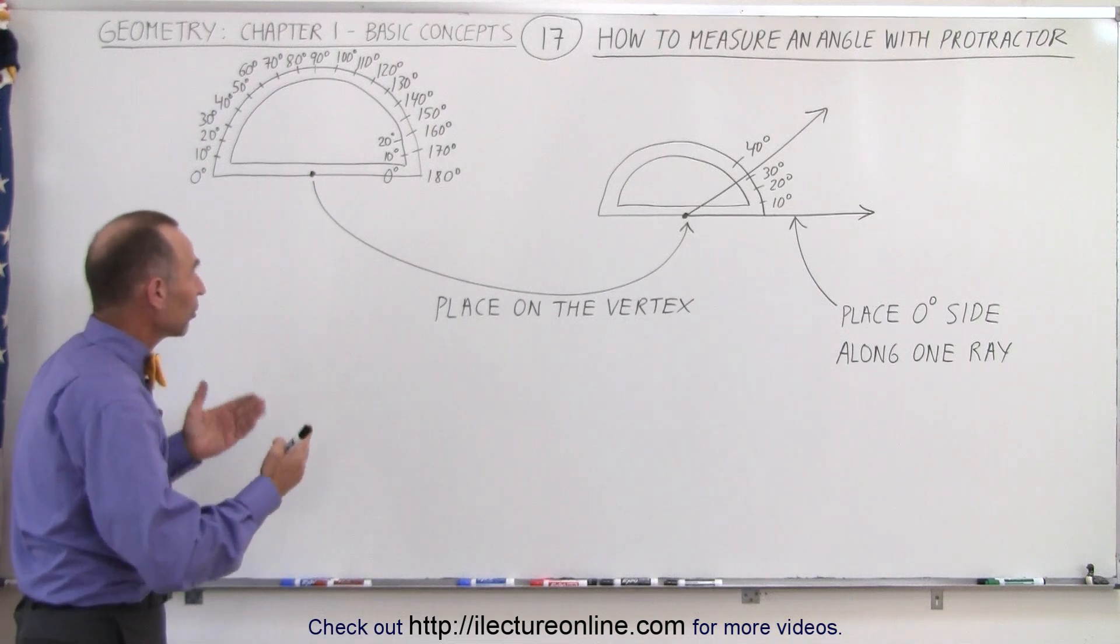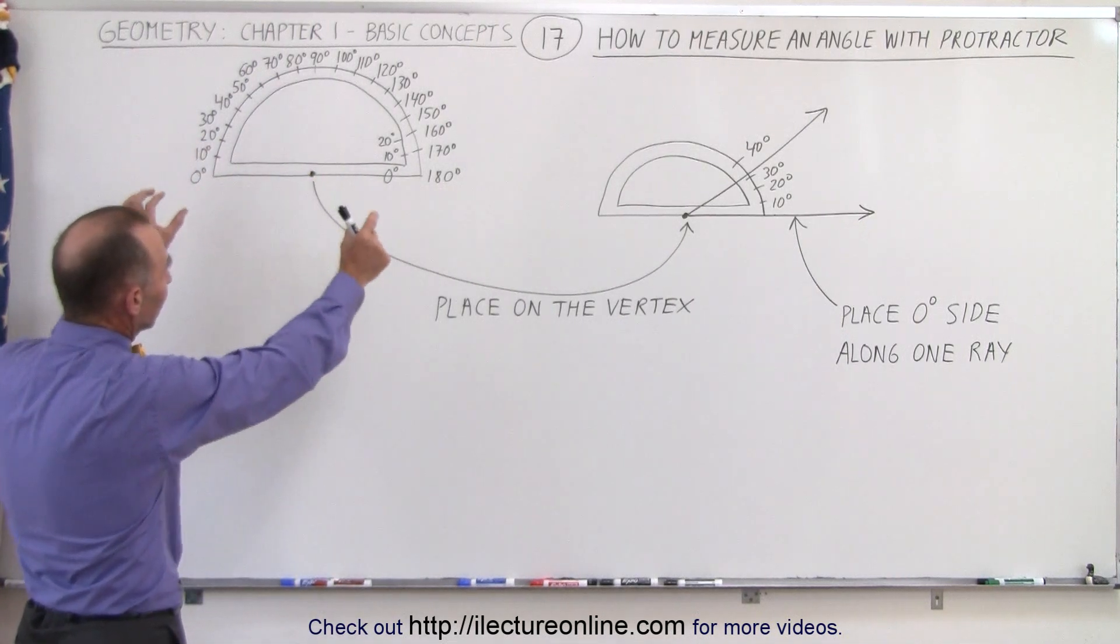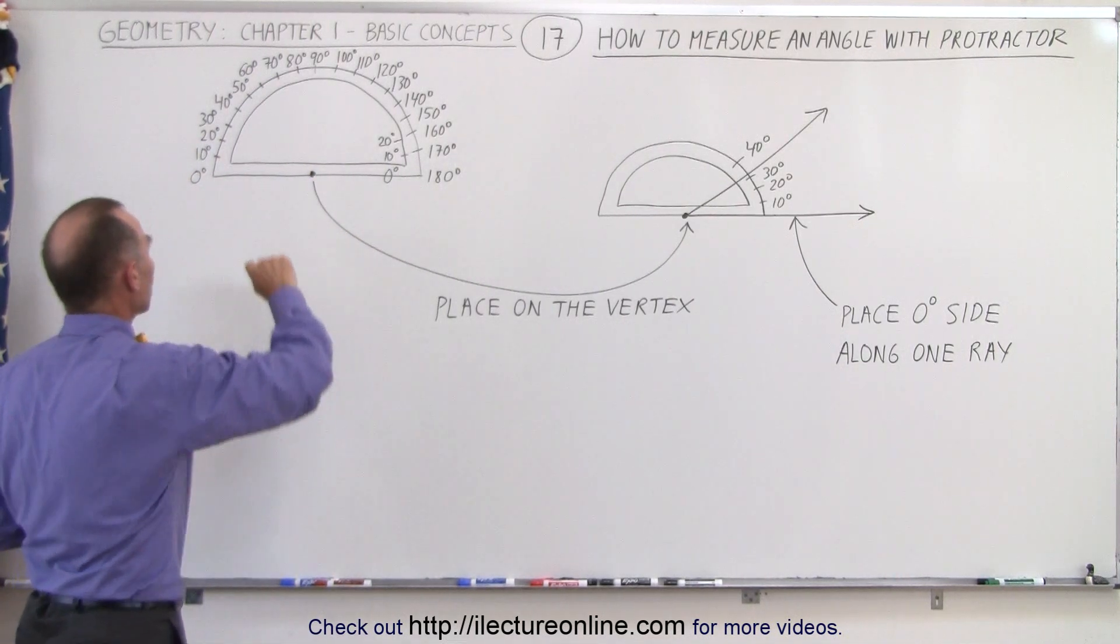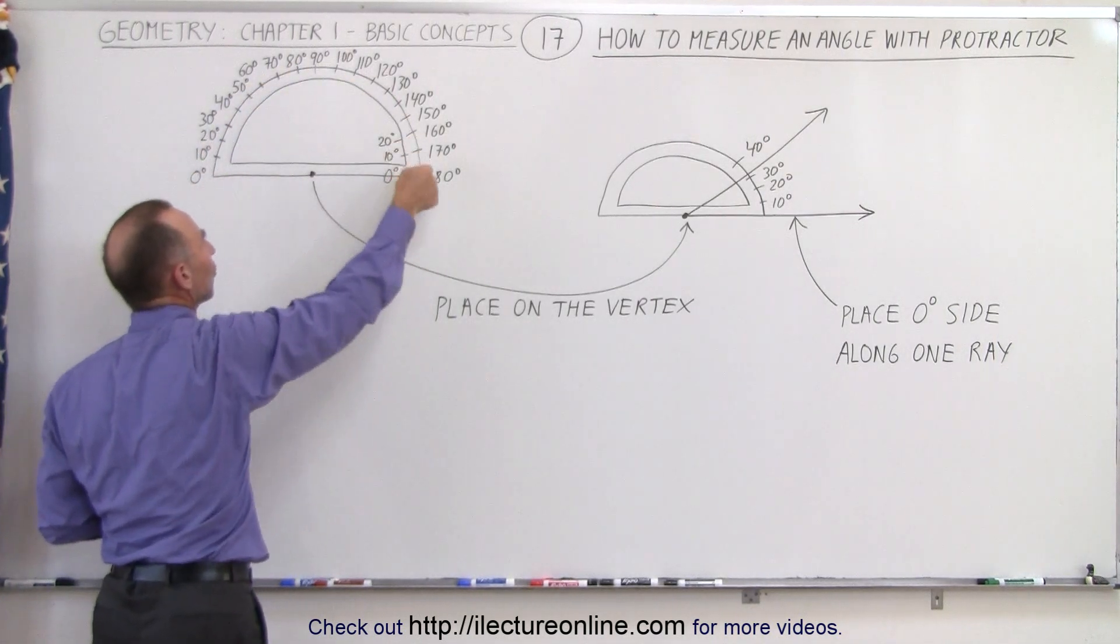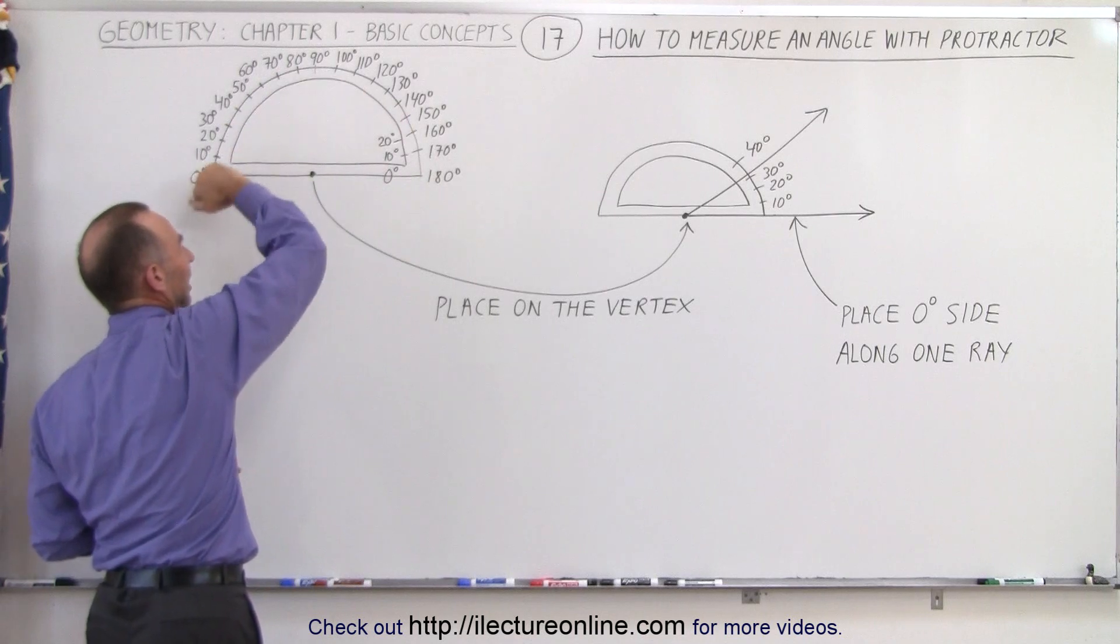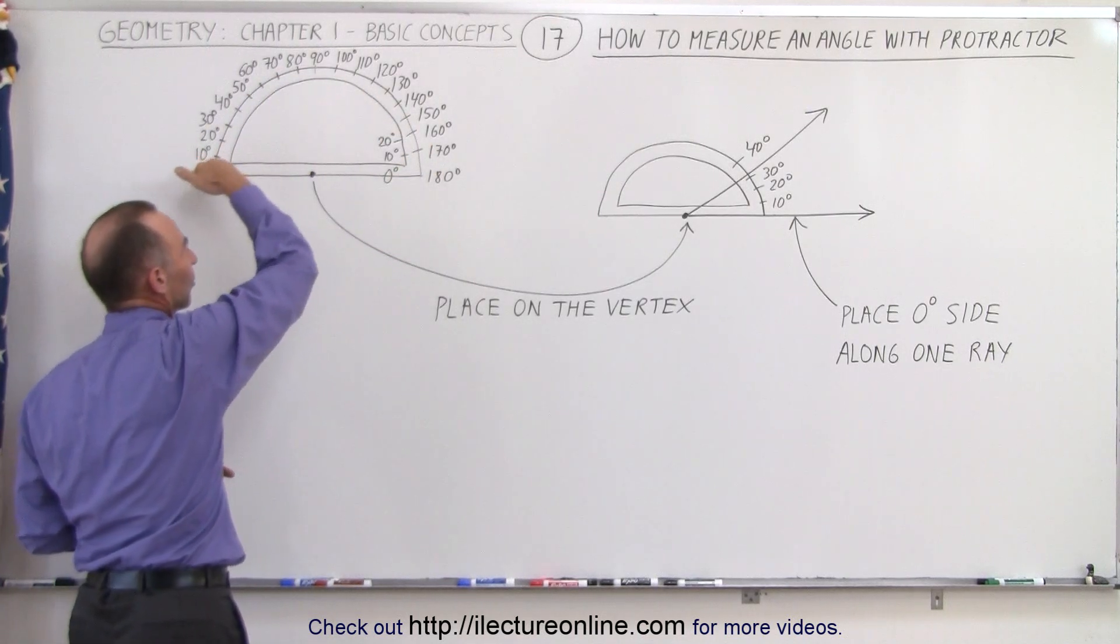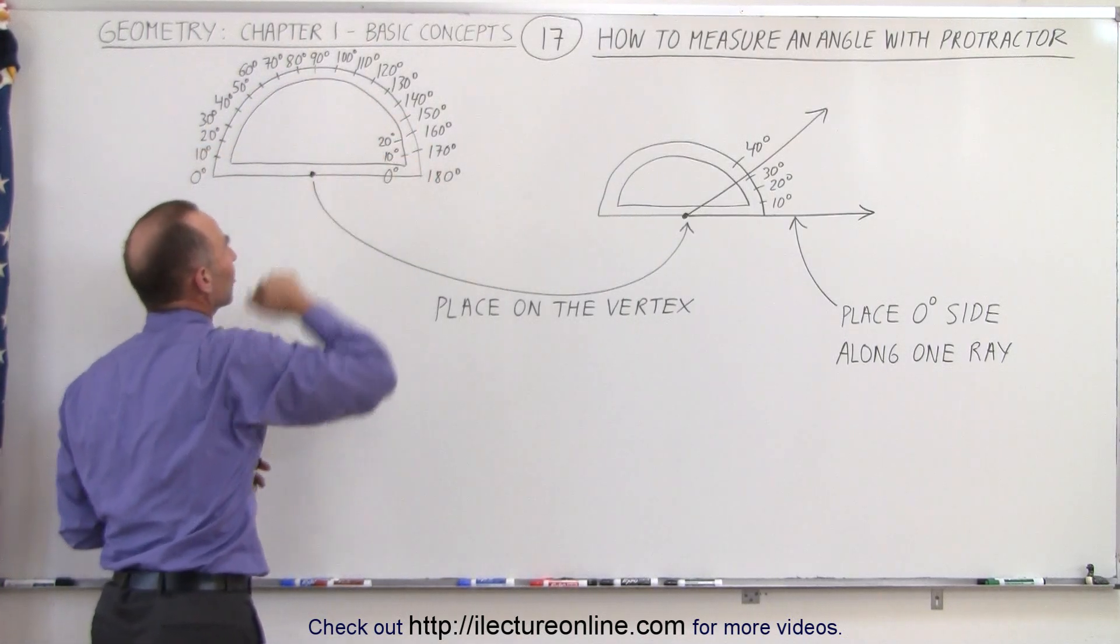And so what does a protractor look like? Well, it's typically made out of plastic, and notice that it has degrees marked along the edge of the protractor. The protractor is kind of like a semicircle on one side, and it's a flat side on the other side right here.